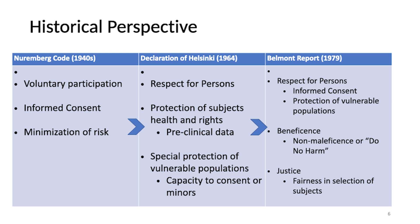In 1964, there was the Declaration of Helsinki. This was the main principle to set ethical principles developed from the medical community, from the WMA, better known as the World Medical Association. It is widely known as the cornerstone document of human research and ethics. They focus on the respect of persons, the protection of subjects' health and rights, and ensuring preclinical data. This was a result of the thalidomide trials, where pregnant women were provided thalidomide and resulted in severe birth defects or deaths. There is also special protection of vulnerable populations — adults with incapacity to consent, or minors.